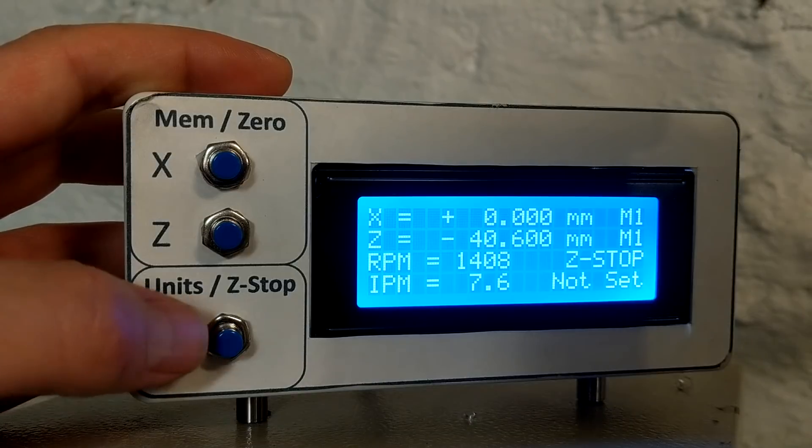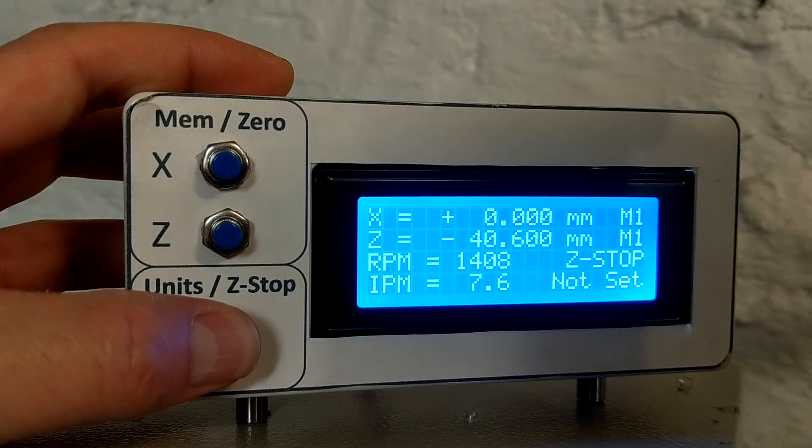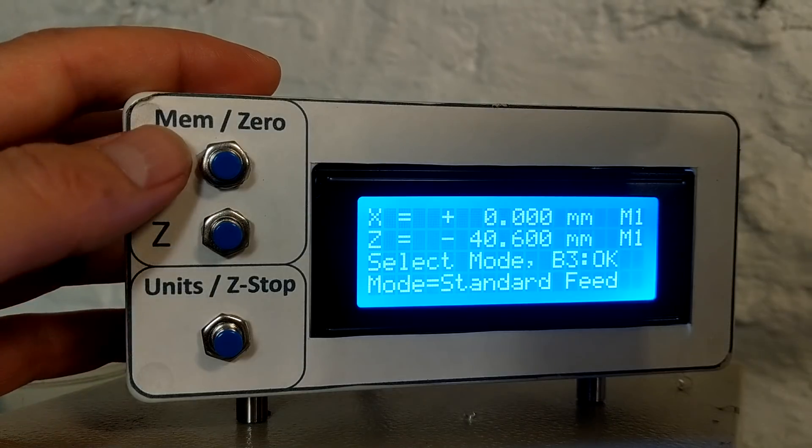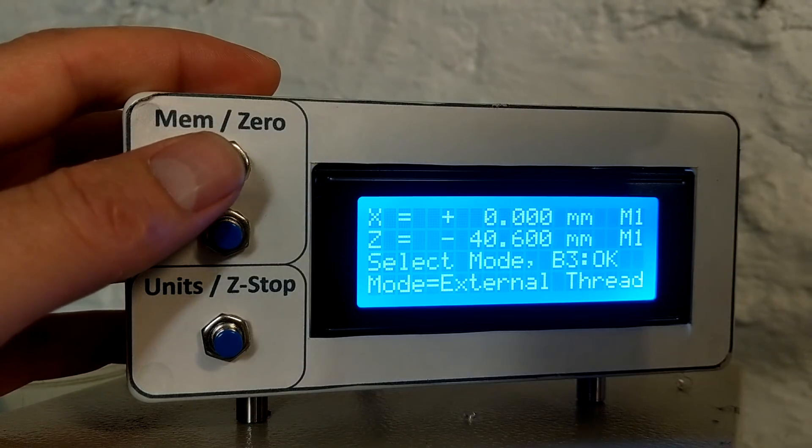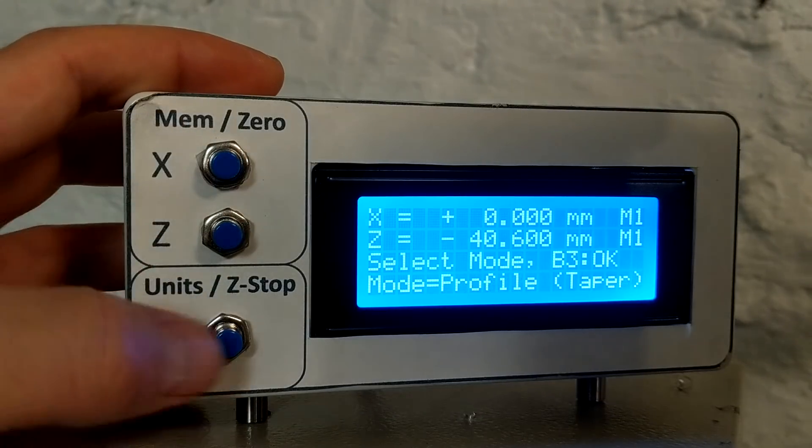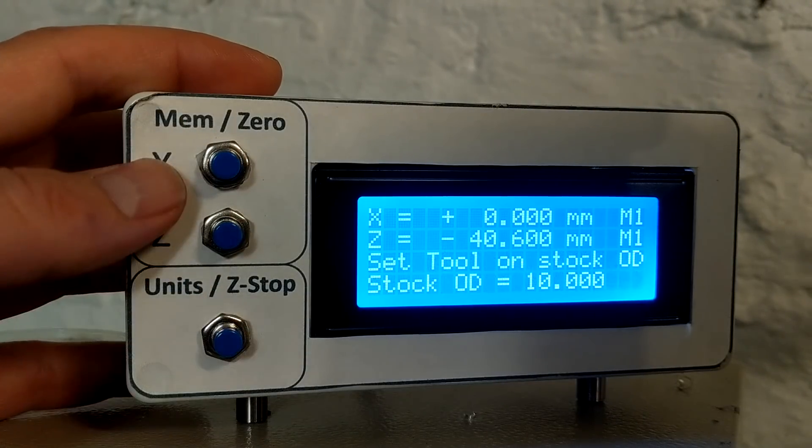So the third button, long press, will enter the mode selection. First one is just standard mode, which would go back to the standard. Then we have external thread, which was the previous video. Internal, which I didn't get through yet. And now profile, this is the one we're using.